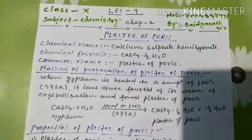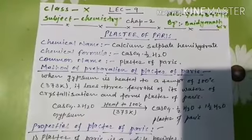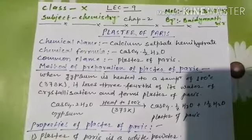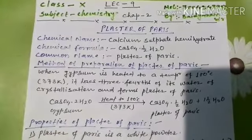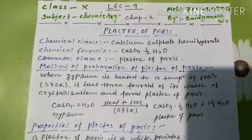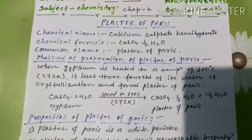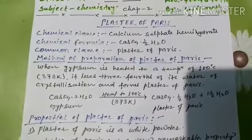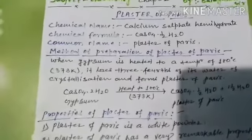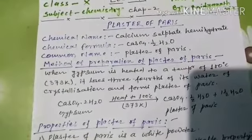Hello students, good morning. This is lecture number nine for Class 10th Chemistry, Chapter 2: Acids, Bases and Salts. In this video I will discuss about Plaster of Paris. The chemical name of Plaster of Paris is calcium sulphate hemihydrate, and its chemical formula is CaSO4·½H2O.